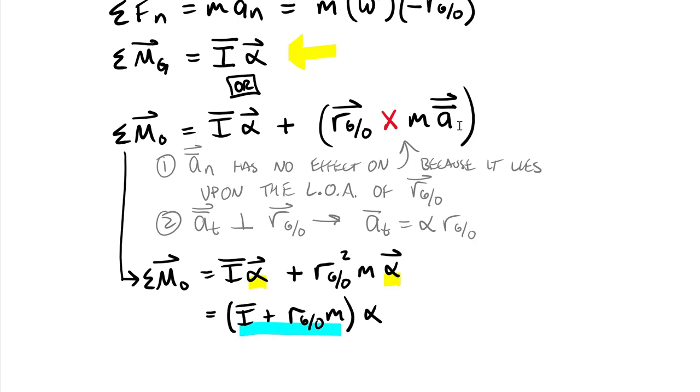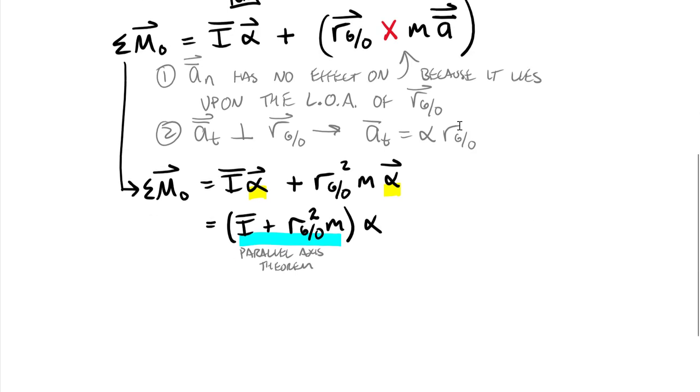We see that we have alpha in both terms. Let's isolate the alphas and collect everything else. It tells me I bar plus my distance R of G relative to O squared times my mass times alpha. I have a moment of inertia about my centroid plus a length squared times mass. If we remember back to the very first section of this chapter, this is the parallel axis theorem and it is how we moved the moment of inertia from the centroid to some other point on the body. It turns out if this is the movement of the moment of inertia from the centroid to point O, I can write this equation: sum of moments about point O equals my moment of inertia about point O times alpha.